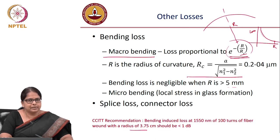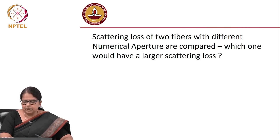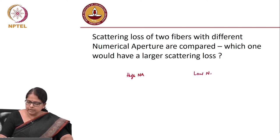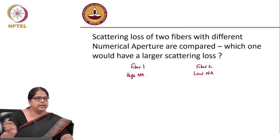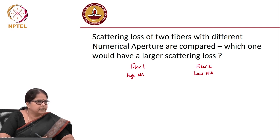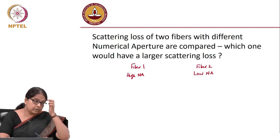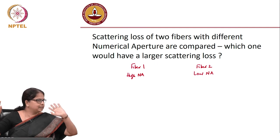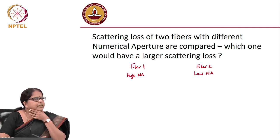Consider two fibers — fiber 1 with high numerical aperture (NA) and fiber 2 with low NA. With no other information, which one has larger Rayleigh scattering loss at the same wavelength? Assuming the same light extraction efficiency, will they have the same loss?